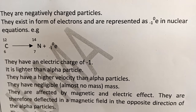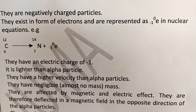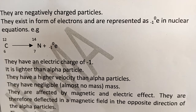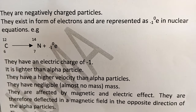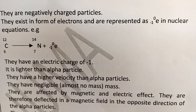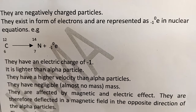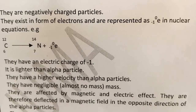Beta particles are lighter than alpha and have higher velocity than alpha because they are lighter — they move faster. They have negligible mass. They are affected by magnetic and electric fields; because of their negative charge, they are deflected toward the positive side of an electric plate.